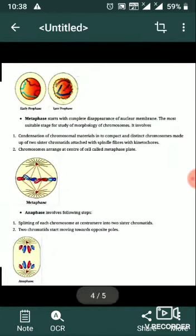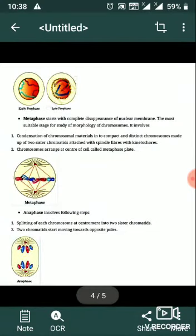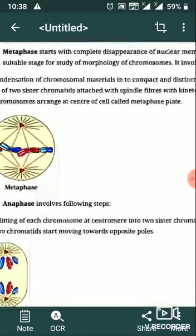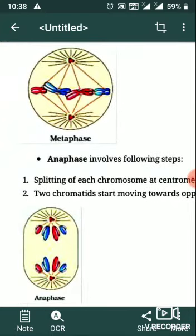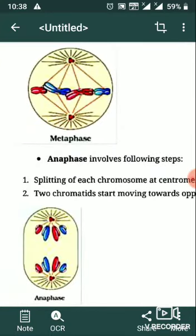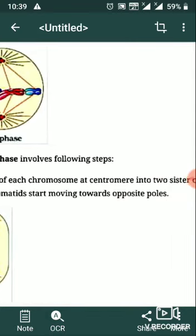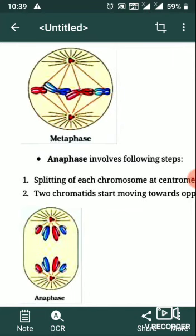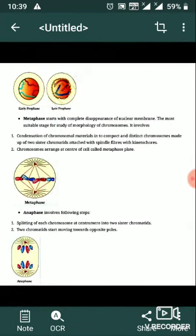Anaphase involves the splitting of each chromosome into sister chromatids. The two chromatids start moving towards opposite poles.